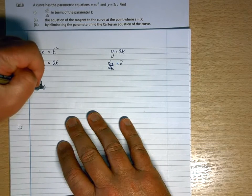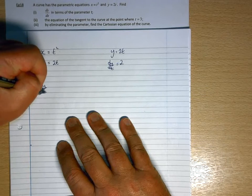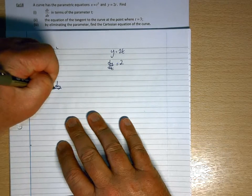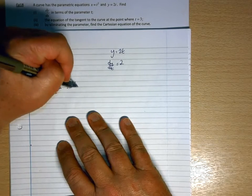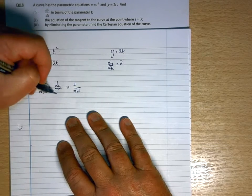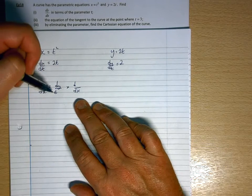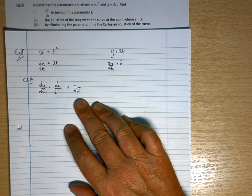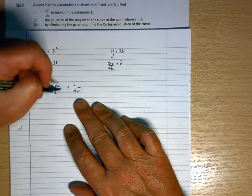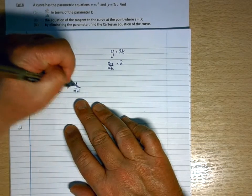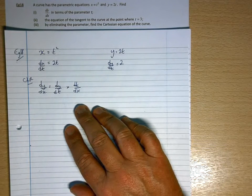And then we know from the chain rule that dy dx would be dy d something times d something dx. And whatever the somethings are, as long as they're the same variable, they'll to all intents and purposes cancel, giving you dy dx. In our case, that extra variable is t.